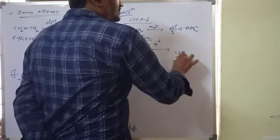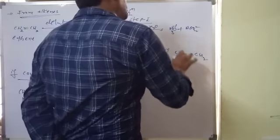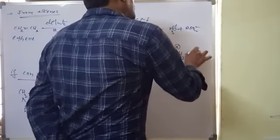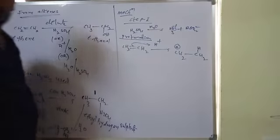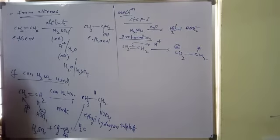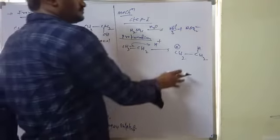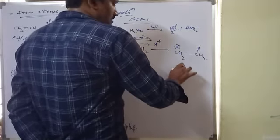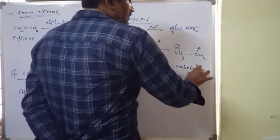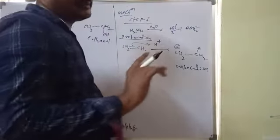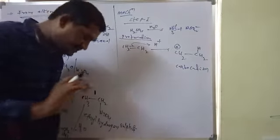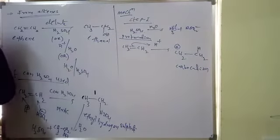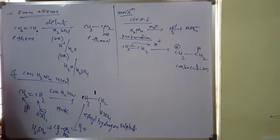During protonation, the pi bond breaks and hydrogen is attacked at one carbon, forming CH₂⁺ — a carbocation intermediate. Once the carbocation intermediate is formed, rearrangements may be possible, such as primary to secondary or secondary to tertiary carbocation shifts.